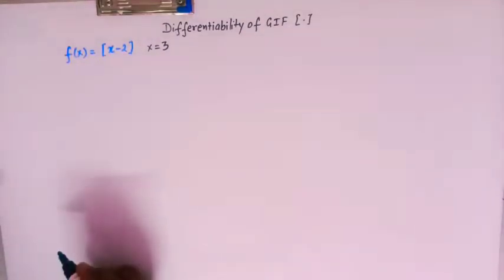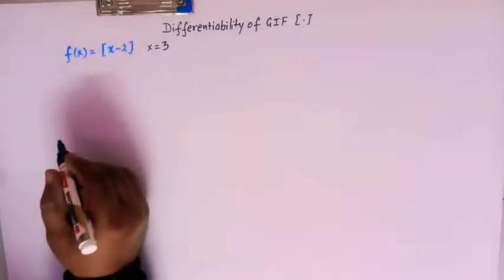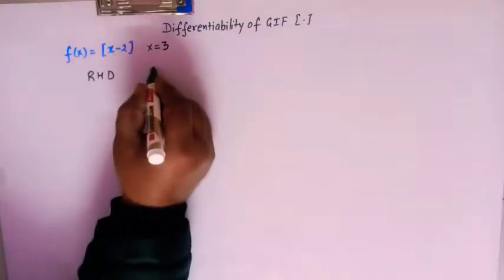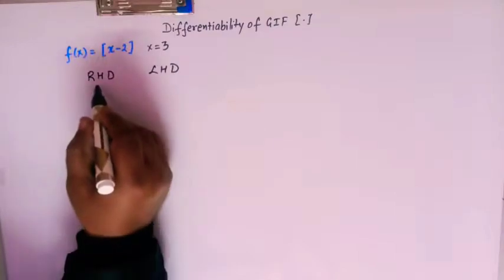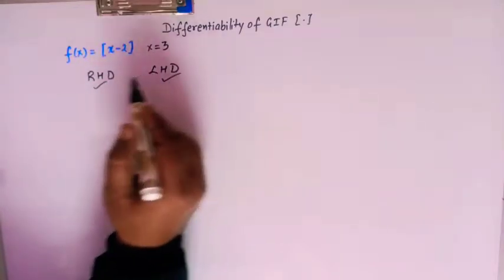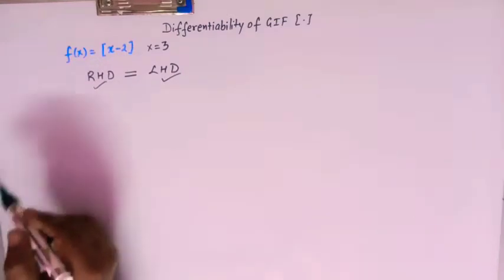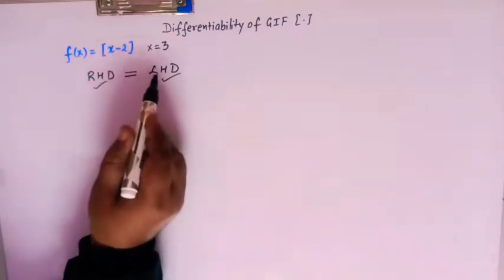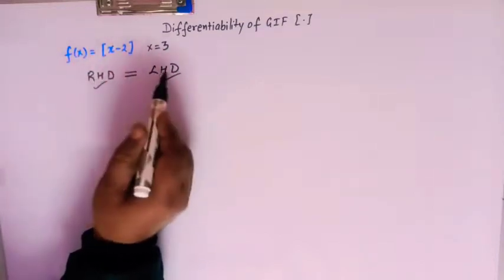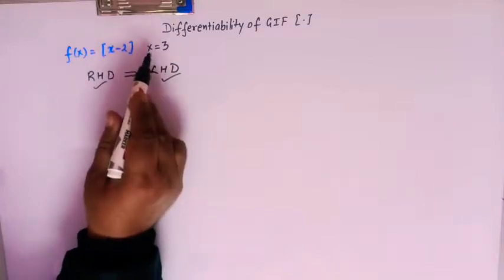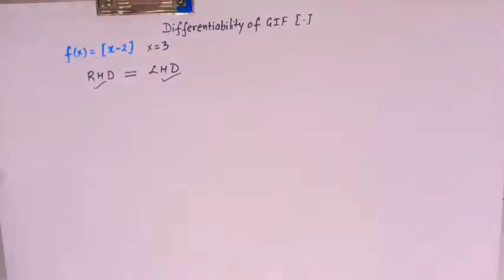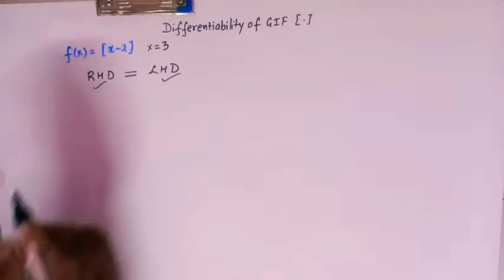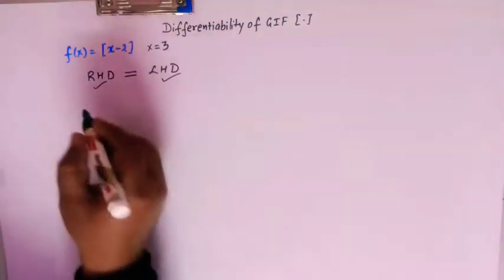We know from calculus that a function is said to be differentiable if the right hand derivative exists and the left hand derivative exists — that is, both are finite — and both are equal. If these two limits are equal at the given point, then the function is said to be differentiable at that given point.